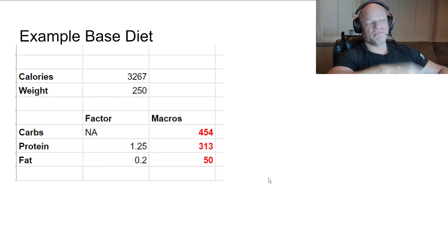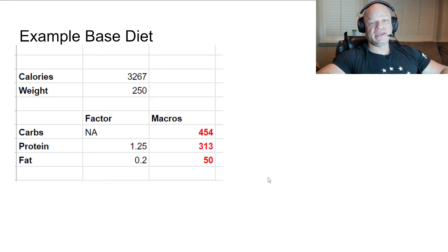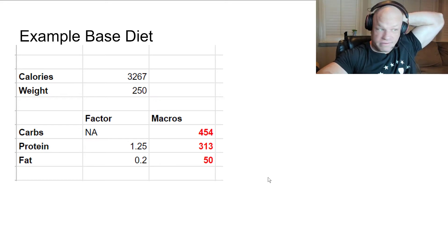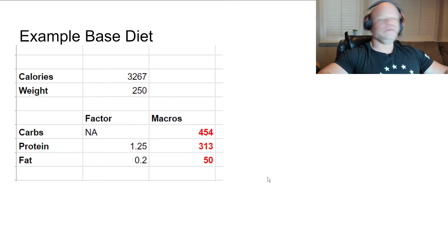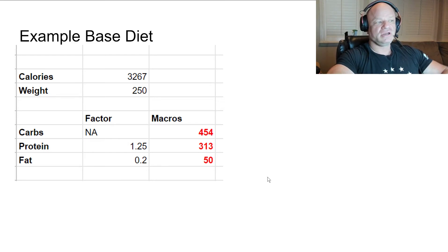As an example of a base diet: my base metabolic rate is 3,267 and my weight is 250 pounds. Consuming 1.25 grams of protein per pound of body weight gives me 313 grams of protein per day. Eating six meals a day, that's roughly 52 grams of protein per meal. For fat, I'm going with 0.2 grams per pound — that's 50 grams of fat per day. My nutritionist doesn't count the fats from lean meats, so we go with 50 grams of added essential fatty acids.